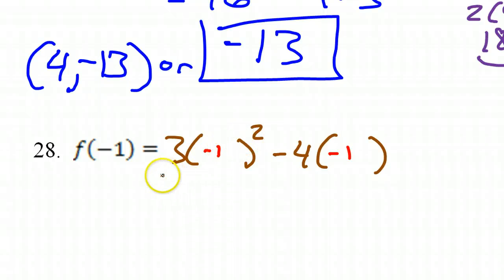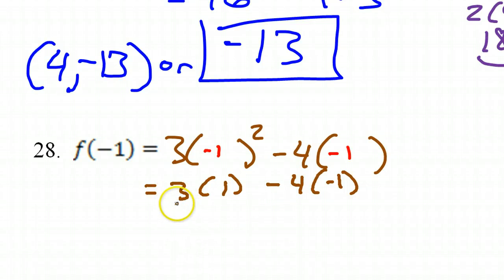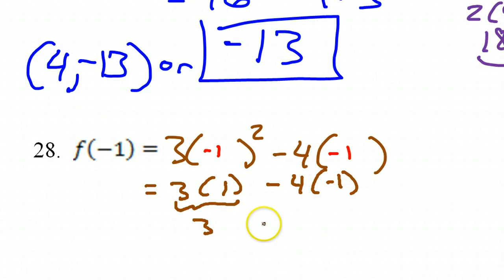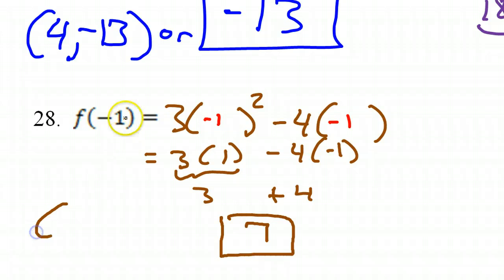We square it first — exponents come before multiplication. Negative 1 squared is positive 1. Now I will do my multiplication. 3 times 1 is 3. Negative 4 times negative 1 is positive 4. Together, that makes 7. As an ordered pair, we're talking about negative 1 comma 7.